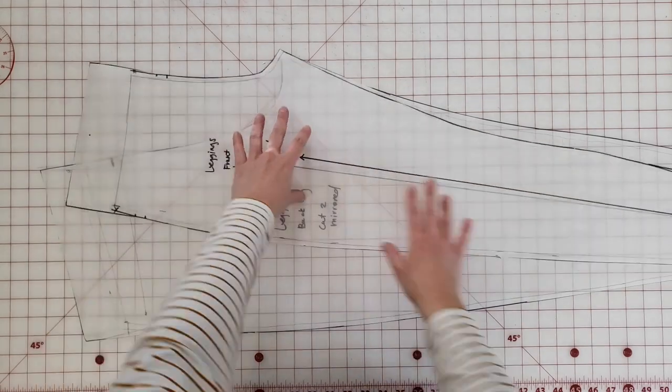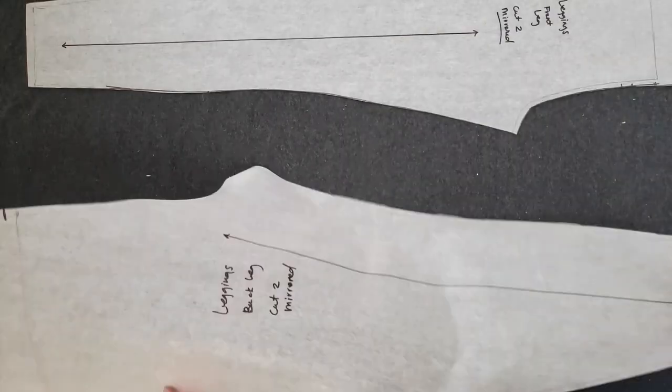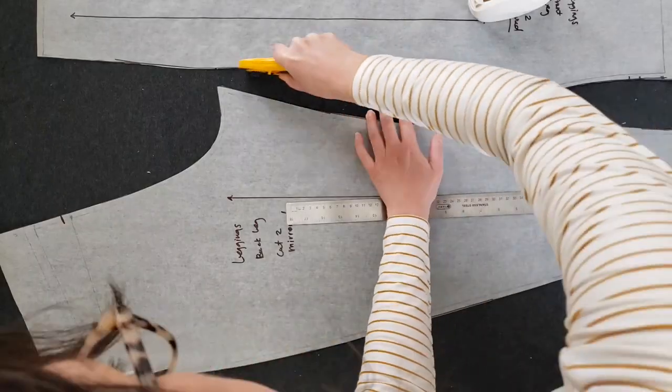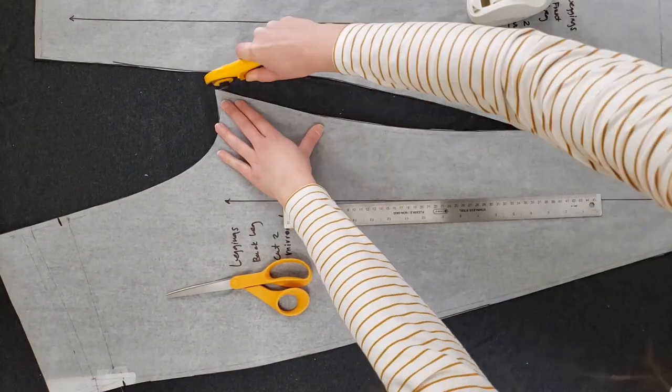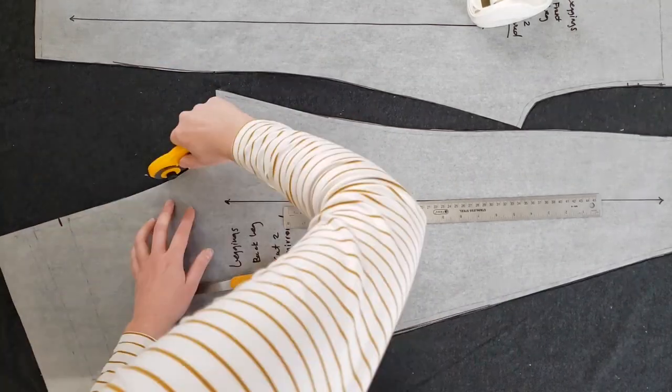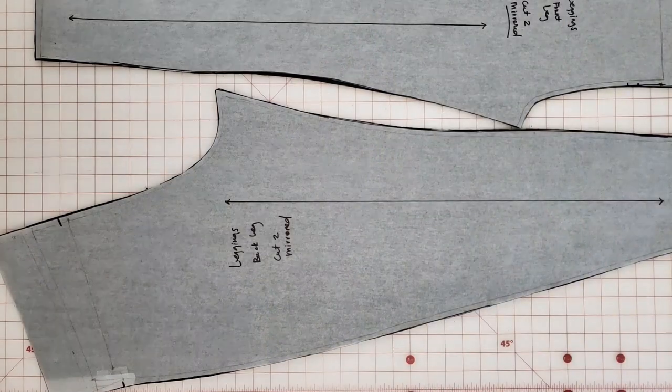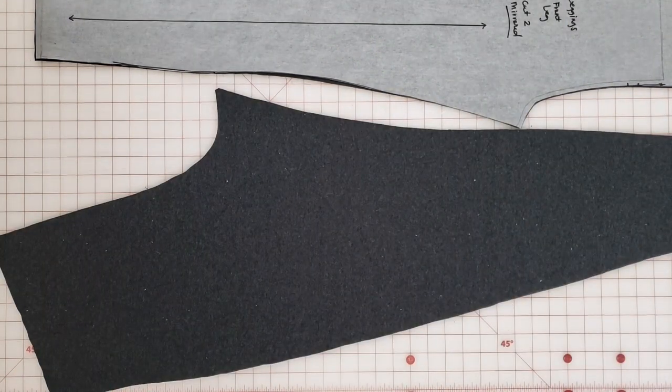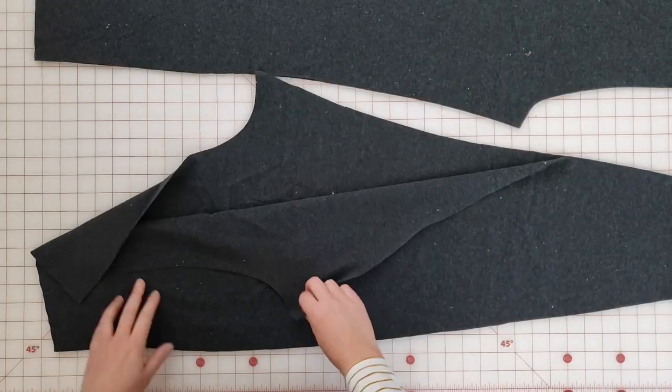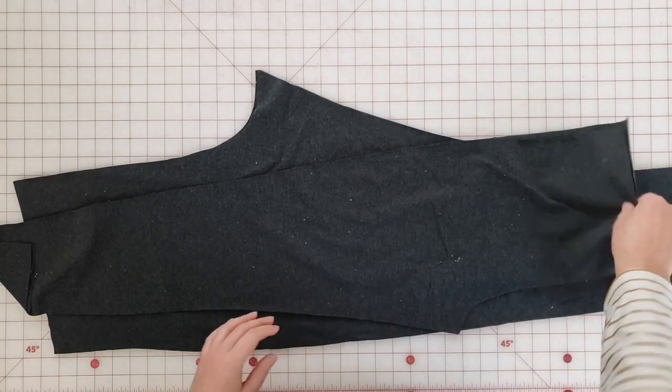I lined up the front and back pieces again just to make sure those side seams would match up, and I'm ready to cut my fabric. I folded my fabric so that I can cut two pieces at once, cutting two pieces mirrored of the back leg and two pieces mirrored of the front leg. Now I'm ready to start assembling my pants.